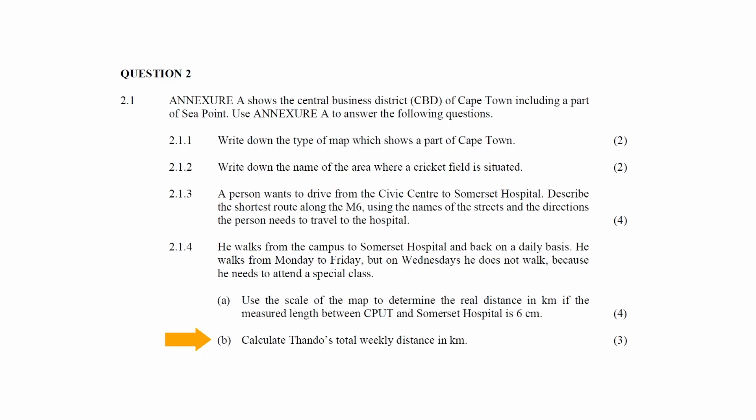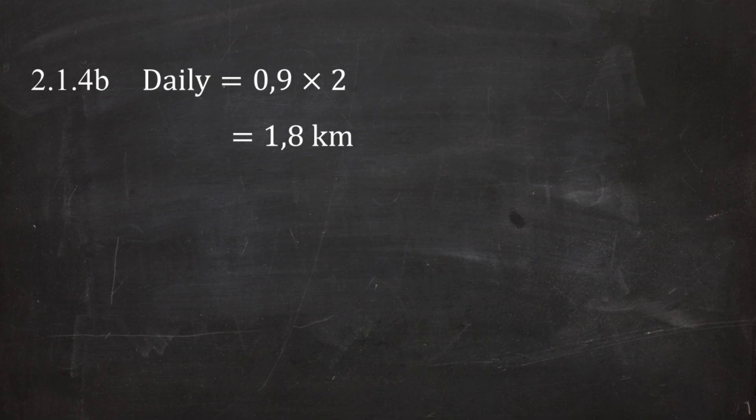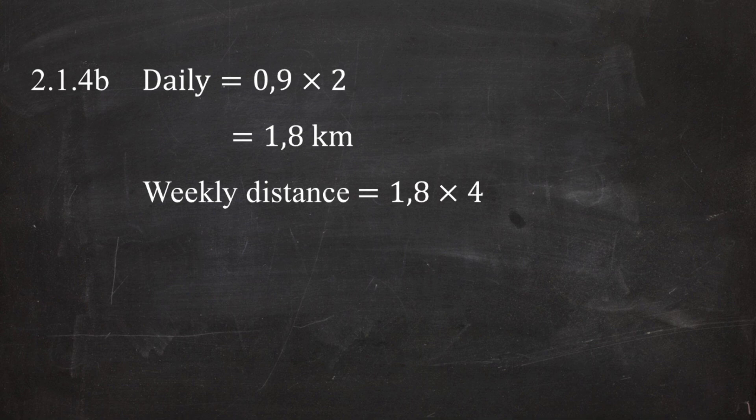In Question 2.1.4.b you are instructed to calculate Tando's total weekly distance in kilometers. Since he walks from campus to Somerset Hospital and back on a daily basis, he walks a total distance per day of 0.9 km × 2 = 1.8 kilometers per day. Since he walks Monday to Friday excluding Wednesday, he walks four days per week. So the total weekly distance is 1.8 km/day × 4 days = 7.2 kilometers per week.